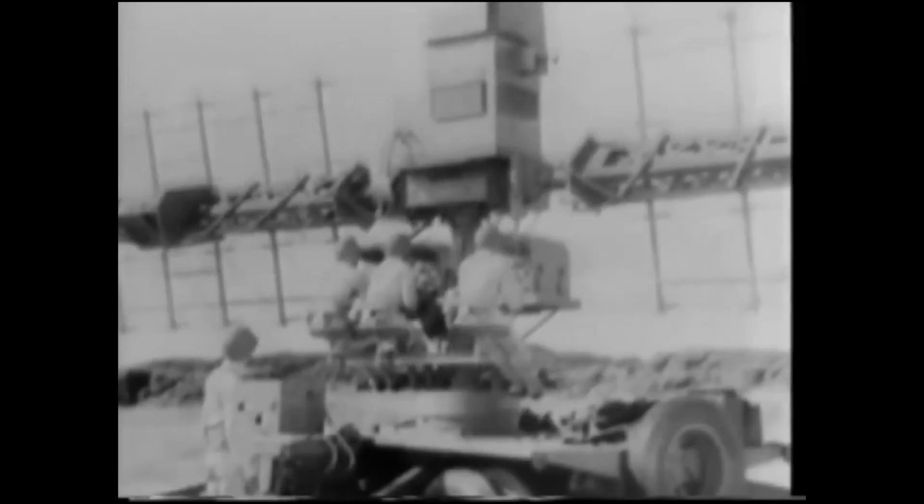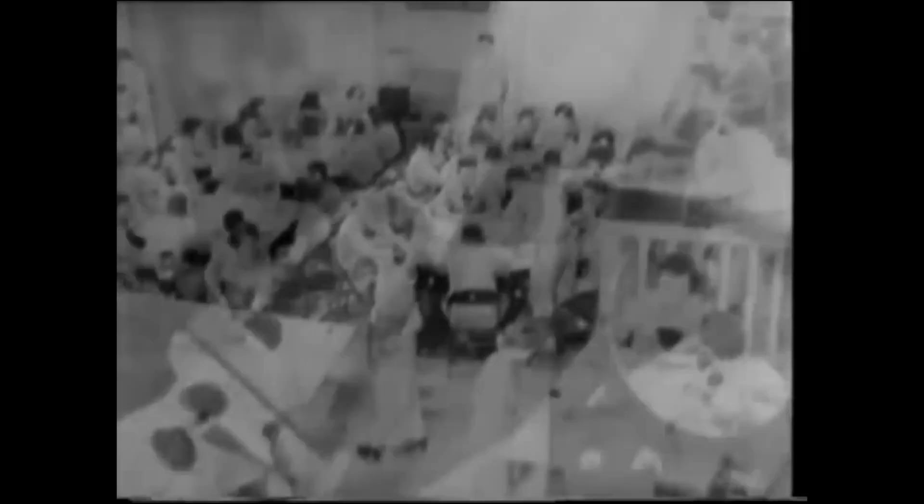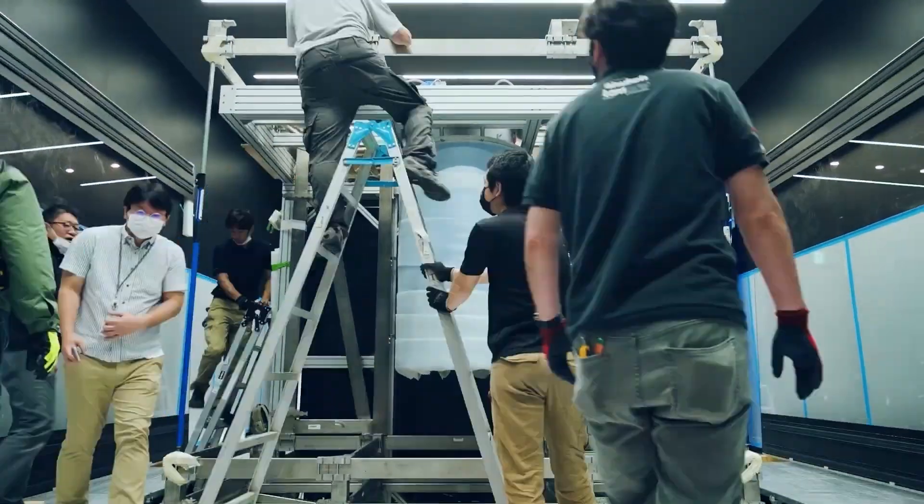During World War II, radar operators used a primitive form of matched filtering to detect enemy aircraft. By comparing received signals with known patterns of enemy planes, they could identify and track them despite the noisy signals. One of the war's most closely guarded secrets, the miracle of radar is now revealed. Shortwave radio signals sent out and returned as echoes allow the plotting room to spot the target. Recently,